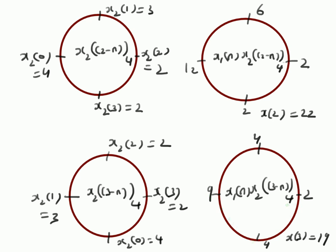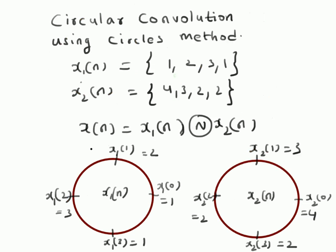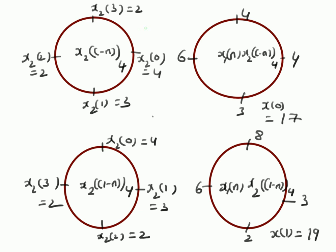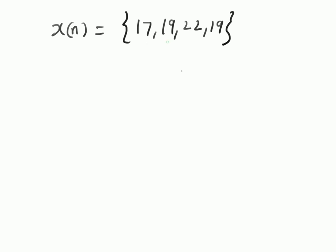Therefore, the circular convolution of the sequences one, two, three, one and four, three, two, two is given by x(n) = {17, 19, 22, 19}. If you continue this process and shift one more time (4-n mod 4), you get back to x(0), so this circular convolution is obviously a periodic sequence.